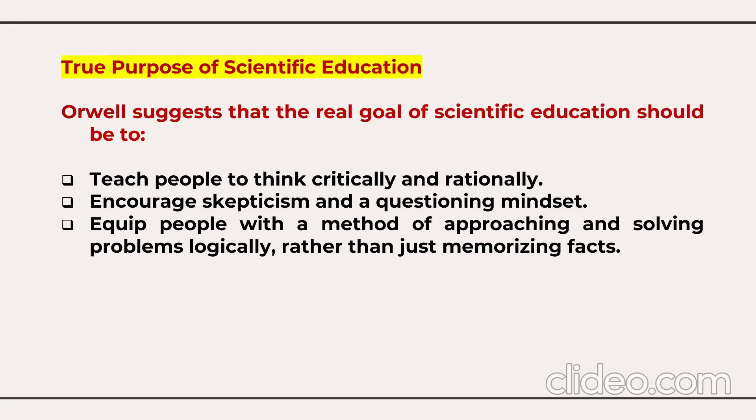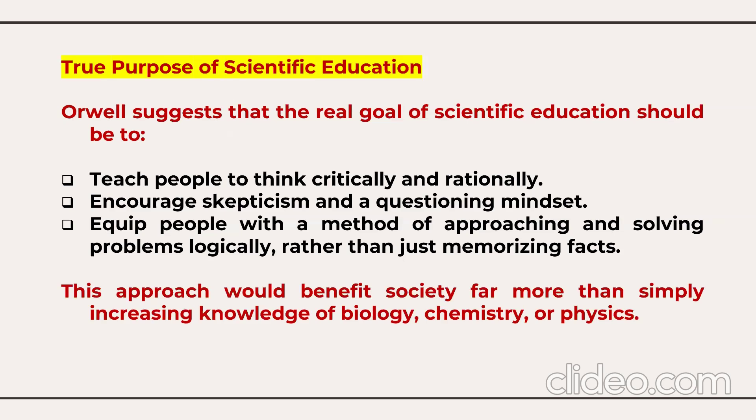George Orwell suggests that the true goal of scientific education should be to teach people to think critically and rationally, to encourage skepticism and a questioning mindset, and to equip people with a method of approaching and solving problems logically rather than just memorizing facts. This approach would benefit society far more than simply increasing knowledge of biology, chemistry, or physics.